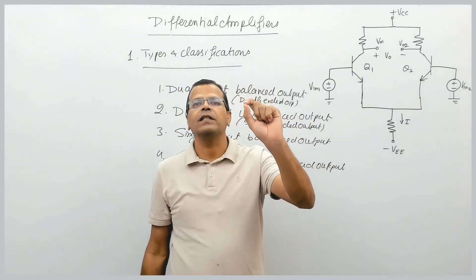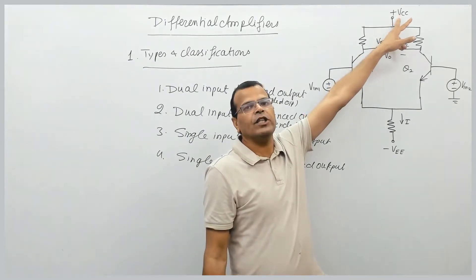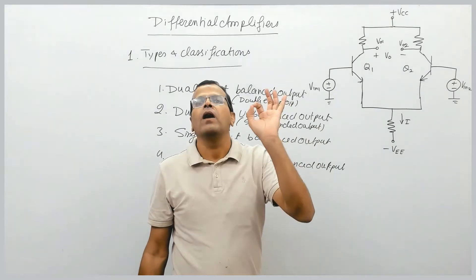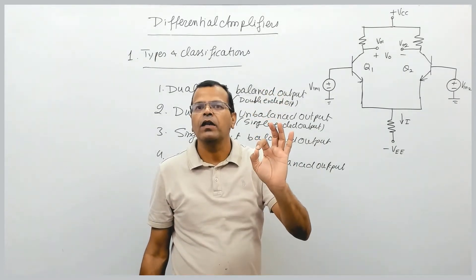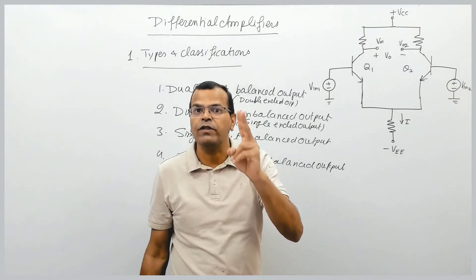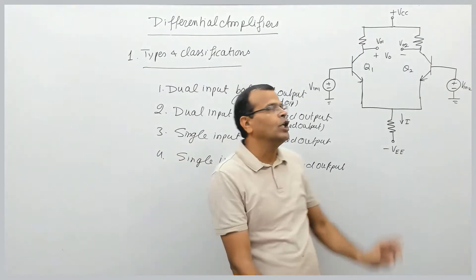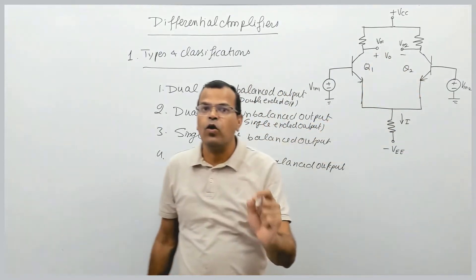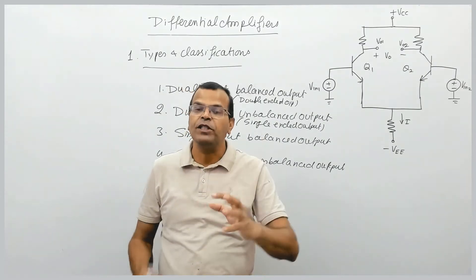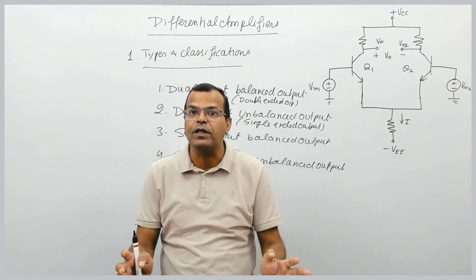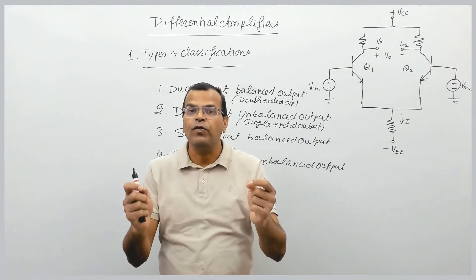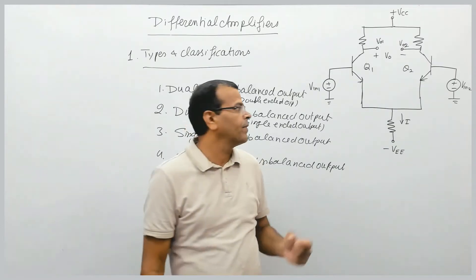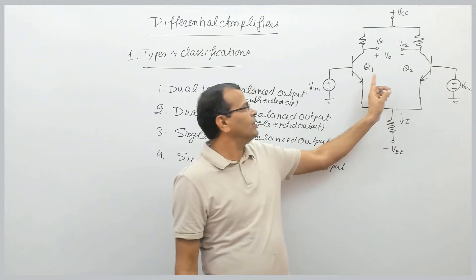Normally a differential amplifier has two biasing voltages: positive Vcc and negative minus Vcc. You should remember this point. Both transistors are identical or matched transistors. These are the assumptions I will be carrying throughout this chapter and throughout the chapter on operational amplifiers as well, so you should take this seriously.